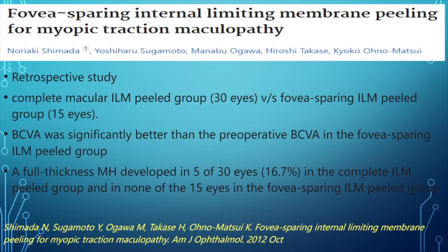In the study by Shimada et al. comparing foveal sparing versus complete ILM peeling, 30 eyes underwent complete macular ILM peeling and 15 eyes underwent foveal sparing ILM peeling. BCVA was significantly better in the foveal sparing group. Full thickness macular hole occurred in 16.7% of the completely peeled group and in none of the foveal sparing group.